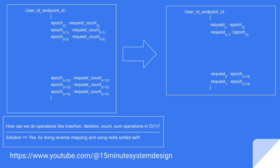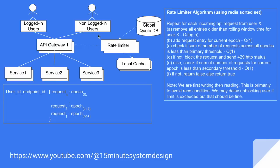How is this going to solve the problem? This is going to work for us because in a Redis sorted set, we can do a lot of operations in O(1) based on the child key. For example, we have logged-in users, non-logged-in users, and we are going to have the rate limiter as a middleware at the API gateway, so that all requests get filtered by the API gateway.